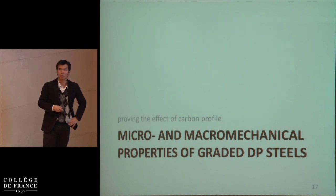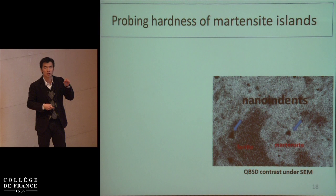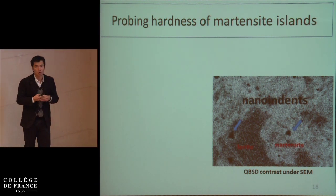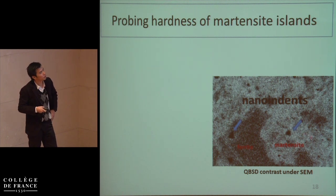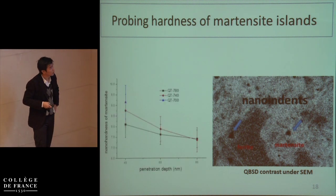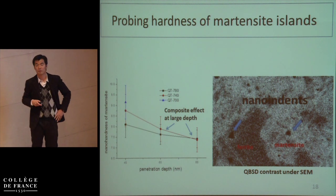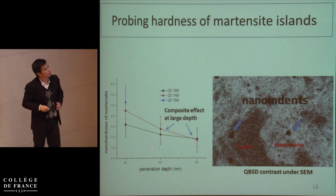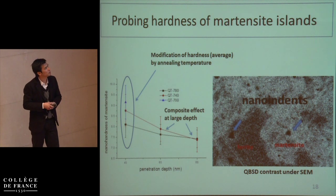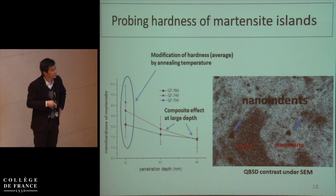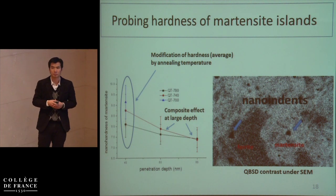How are the mechanical properties of such graded DP steels? The first thing is to prove that the annealing temperature has an effect on the properties of martensite. I do this by nano-indentation to measure the local hardness of the phases. This is the SEM image with QBSD contrast — I can distinguish the ferrite and martensite. I probe the evolution of nano-hardness of martensite with penetration depth. Due to the composite effect of the soft ferrite matrix we cannot use larger penetration depth, but with a moderate penetration depth of about 40 nm, it is confirmed that the hardness of martensite decreases when we increase the annealing temperature. This agrees with the DICTRA simulation.